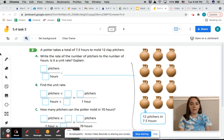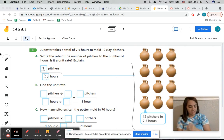So for part A, we're going to write the rate of the number of pitchers to the number of hours. Is it a unit rate? Explain. So let's write this ratio down. So we have 12 clay pitchers for 7 1/2 hours. All right, is this a unit rate? Remember what a unit rate is? Unit rate is when one of our quantities is a value of 1, which neither of these have a value of 1. So it's no, neither has a value of 1.